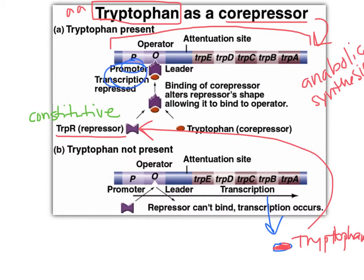RNA polymerase is bound there, but it can't get through. The bouncer is sitting at the operator saying you are a loser and you are not allowed to go through and do transcription. No complementary base pairing for you.